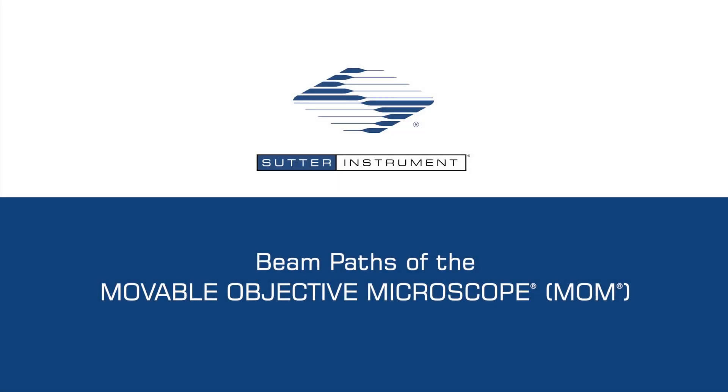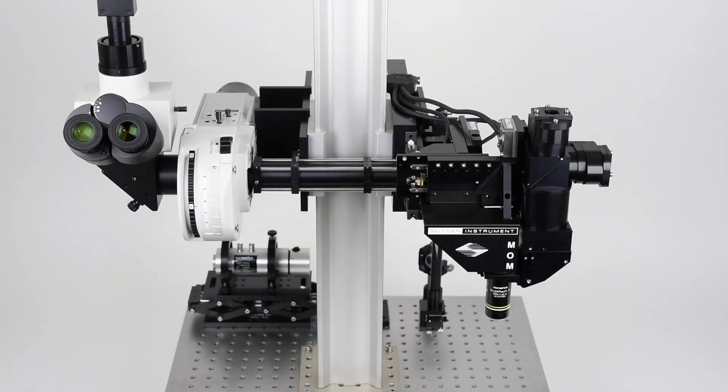This video highlights multiple beam path options in the Sutter Instrument Multi-Photon Moveable Objective Microscope. Please note that the table optics shown here have been simplified.